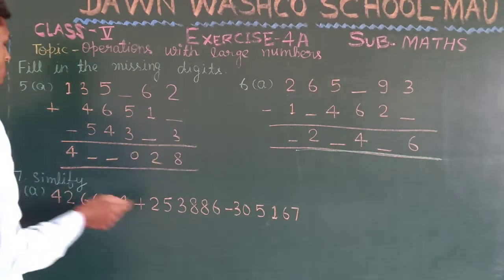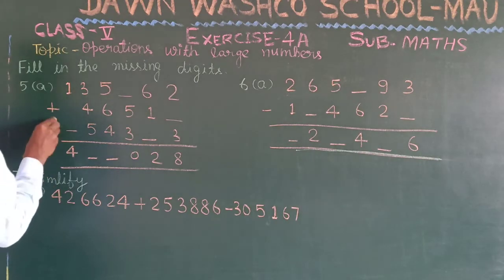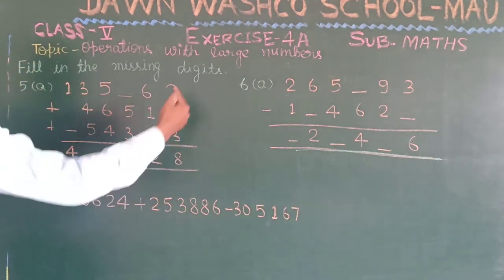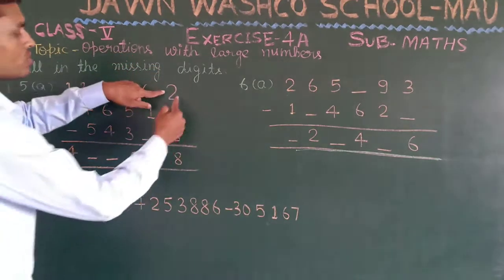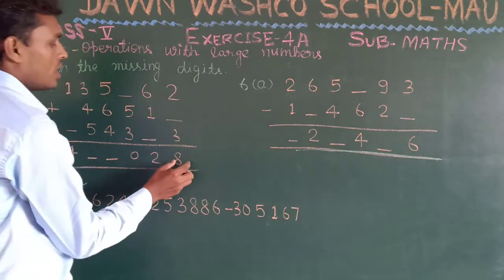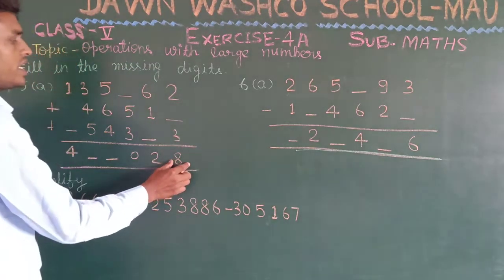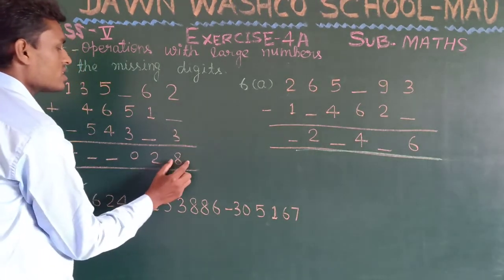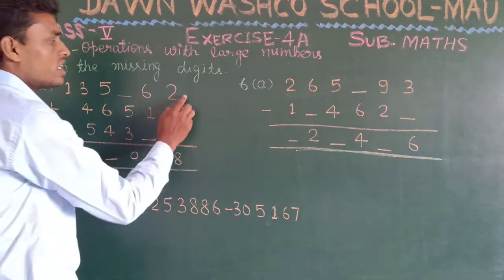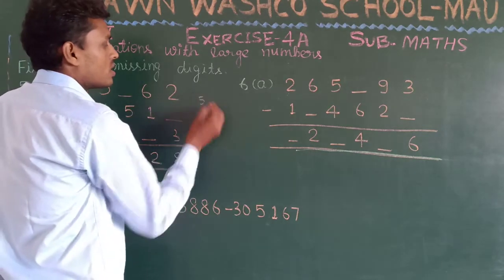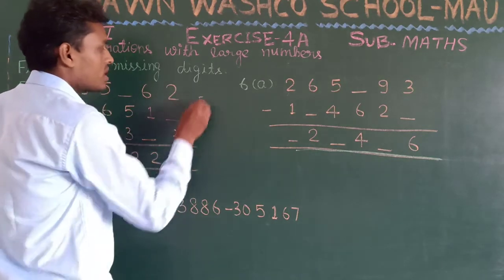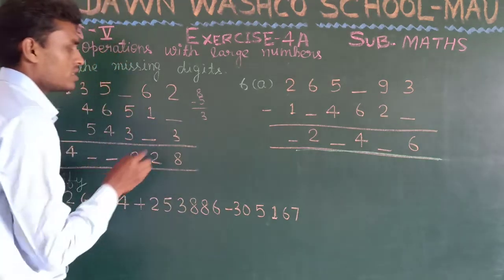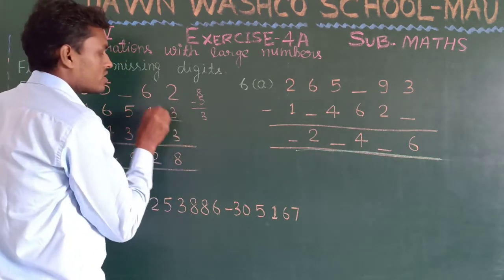We have to add these three numbers, and this is their sum. In the ones column we are having 2 and 3, and the result digit is 8. What should be added to 2 and 3 to give 8? Two and three is five, and 8 minus 5 is 3, so we write 3 here.